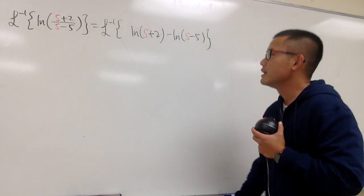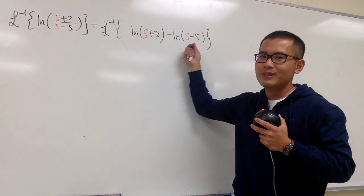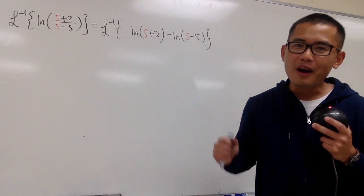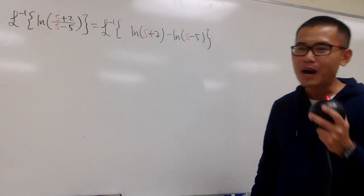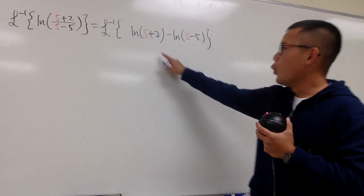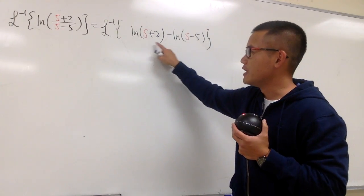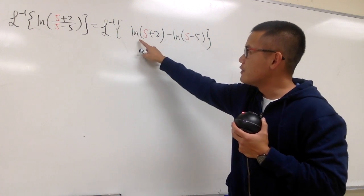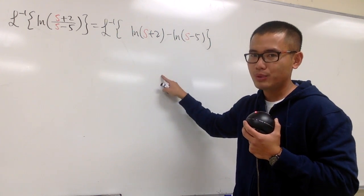This is just by the ln property — that's the fundamental. Right now I still don't know how to handle this too well. But keep in mind, we are in differential equations, which means calculus shall be our second nature. Wouldn't it be nice if we could work with the derivative? The derivative of ln(s+2) is 1 over (s+2).